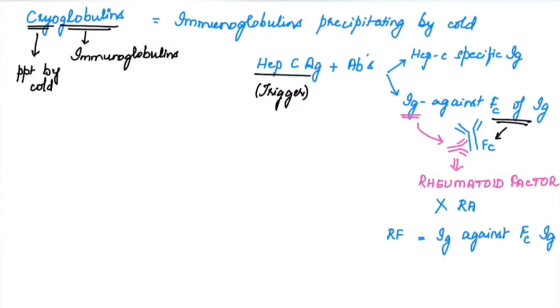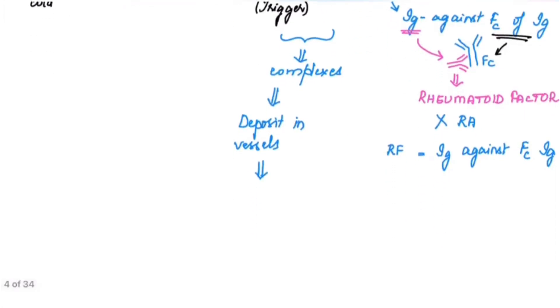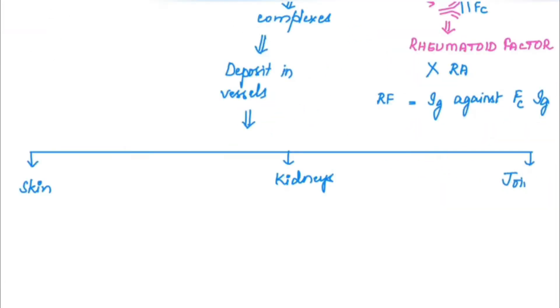The antigen-antibody complexes form immune complexes which then deposit in the blood vessels, especially involving organs like skin, kidneys, and joints.